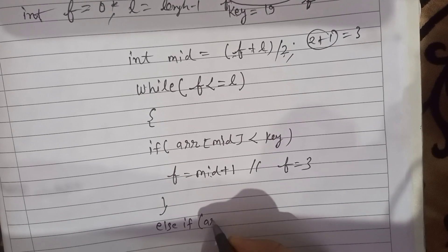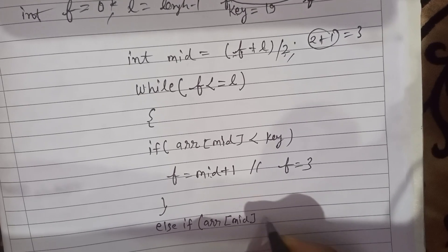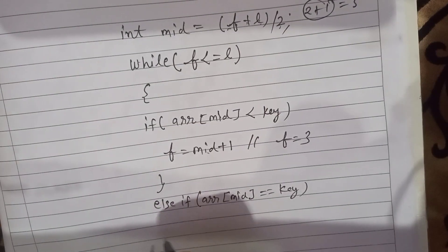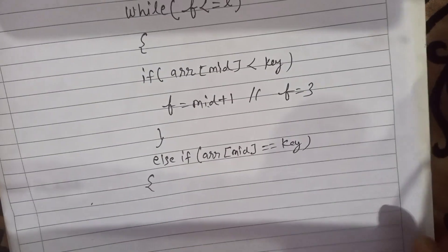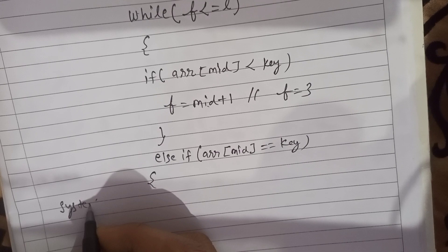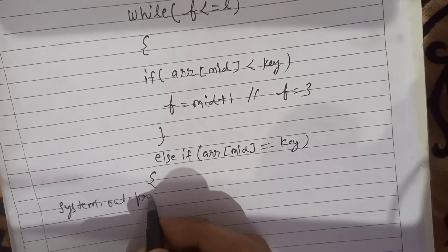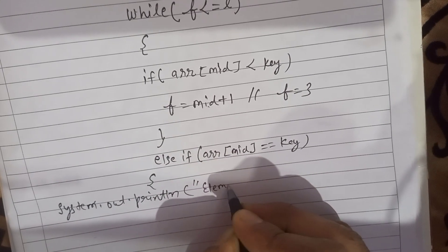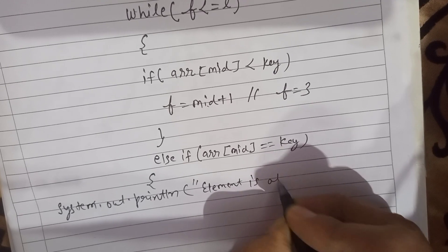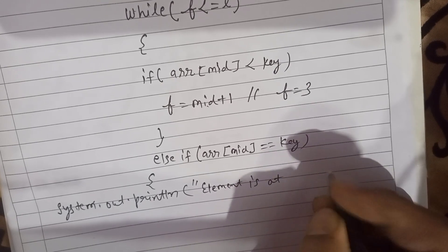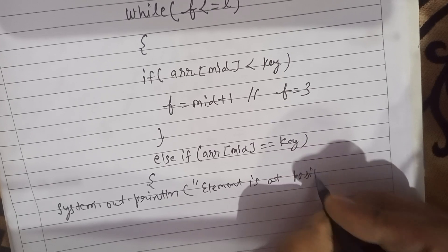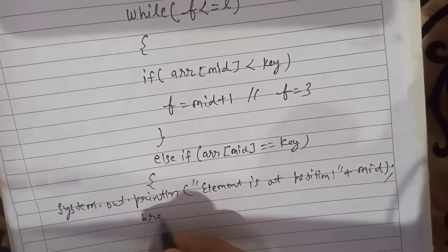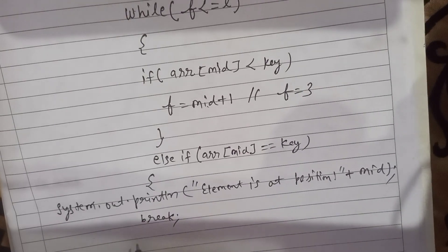In the else if block, if the mid value is equal to our key value, then we simply use a print statement: System.out.println — 'element is at position' — and display the mid position. As soon as this is true, we break the loop since no further searching is needed.